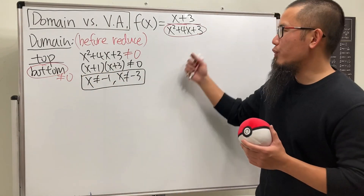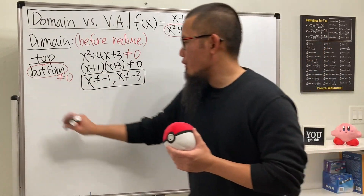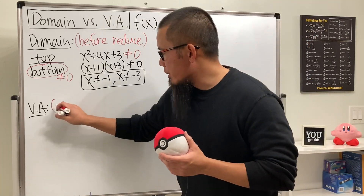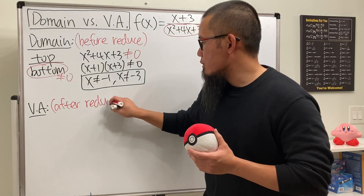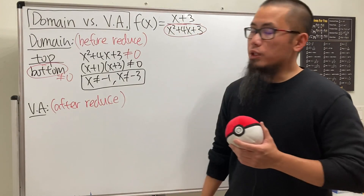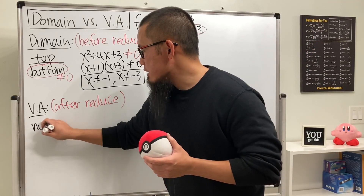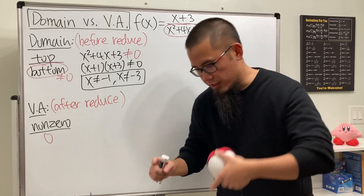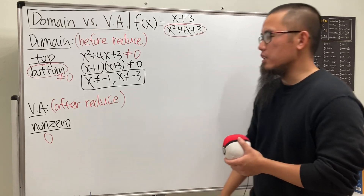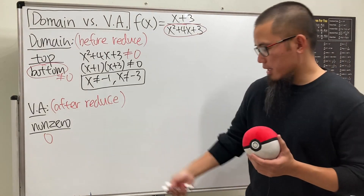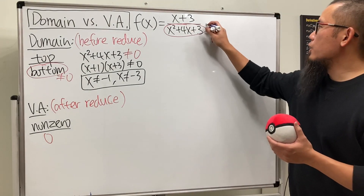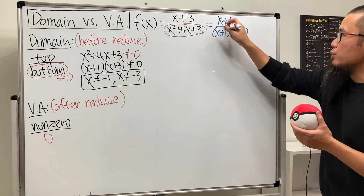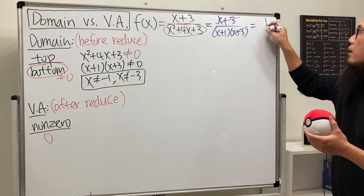Those are the two x values we cannot use for this function. Now for the vertical asymptote — this is the tricky one. We have to do this after we reduce all the common factors. The reason is that you need a non-zero number on top over zero, because that's the case where the curve goes straight up or straight down — to infinity or negative infinity. So on the bottom we factor, giving us (x + 3) over (x + 1)(x + 3), and then we reduce to get 1 over (x + 1).